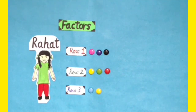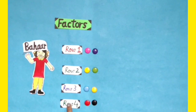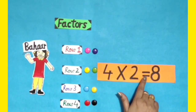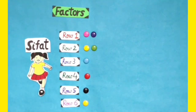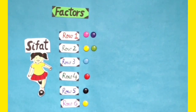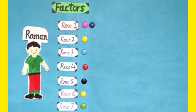Rahat tries to arrange these buttons in 3 rows but she could not arrange them equally in all the rows, so this cannot be represented in a multiplication form. Bahar has arranged these buttons in 4 rows with 2 buttons in each row, so this can be represented as 4 into 2 is equal to 8. Sahib tried to arrange these buttons in 5 rows but could not arrange them equally in each row, so this cannot be represented in a multiplication form. Sifth tried to keep these buttons in 6 rows but could not arrange them equally, so again we cannot write this into a multiplication form. Raman arranged these buttons in 7 rows but could not place them equally in each row, so we cannot represent this in a multiplication form.